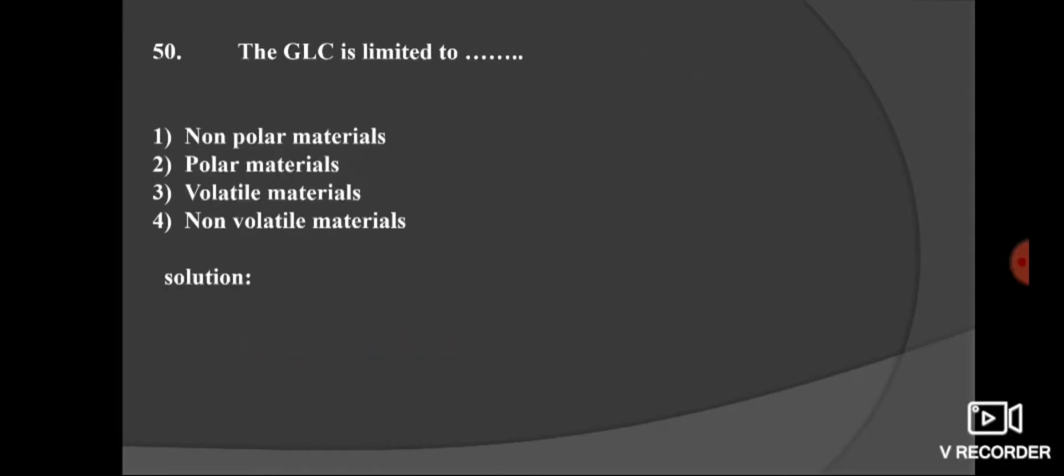And last question. In gas liquid chromatography, the GLC is limited to: option 1, non-polar materials; second, polar materials; third, volatile materials; and 4, non-volatile materials. So here, gas liquid chromatography is limited to volatile sample and it is not suitable for thermally labile sample. Here, option 3, volatile material is the right option.